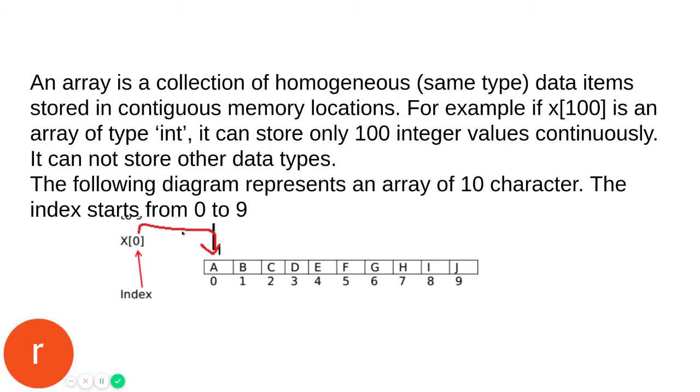The following diagram represents an array of 10 characters. The index starts from 0 to 9. Each element inside the array can be extracted and accessed using the index. In C++, arrays start from 0, so the index ranges from 0 to 9, meaning 10 elements inclusive. This is called the index, and when put inside square brackets with the array name, we call it a subscript.